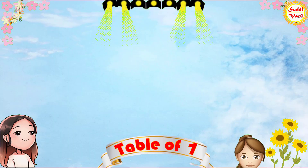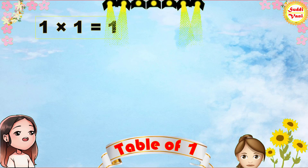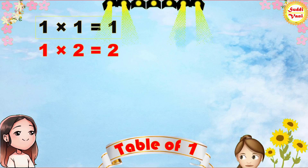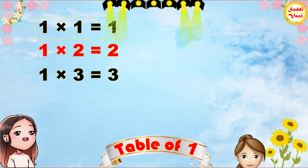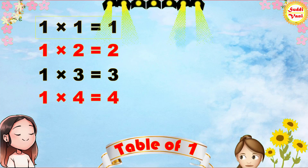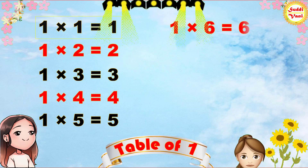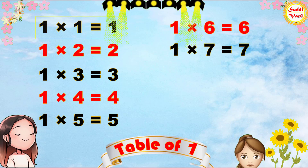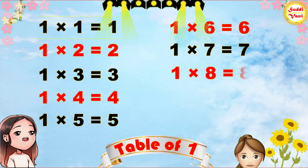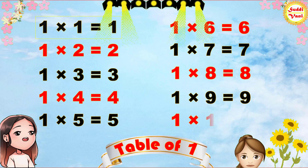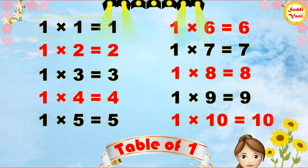Once again: 1 times 1 is 1, 1 times 2 is 2, 1 times 3 is 3, 1 times 4 is 4, 1 times 5 is 5, 1 times 6 is 6, 1 times 7 is 7, 1 times 8 is 8, 1 times 9 is 9, 1 times 10 is 10.